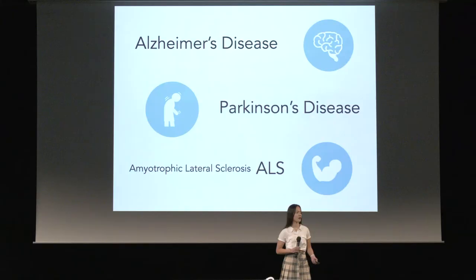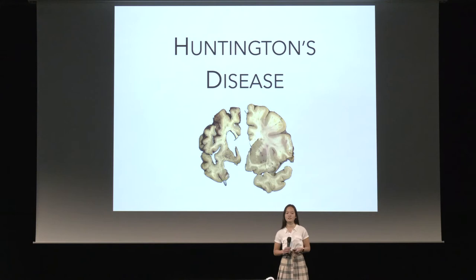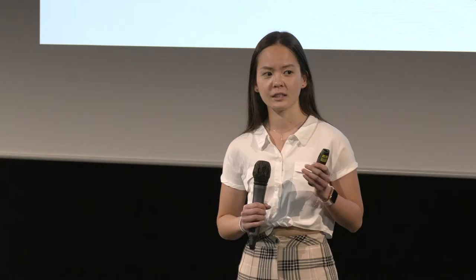Now imagine having all three of these diseases at the same time. That's what it's like to have Huntington's disease. Huntington's is a disease affecting your movements and cognition and it typically starts in mid-adult life, but it can also affect children. The difficult part with Huntington's is that once symptoms start, it progressively worsens over time as it is a neurodegenerative disease.